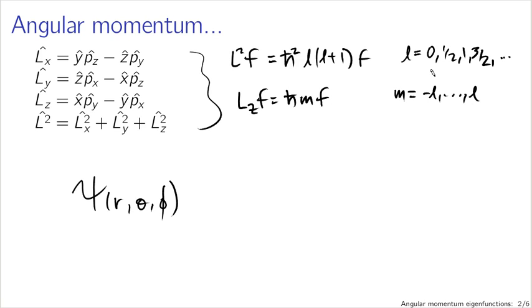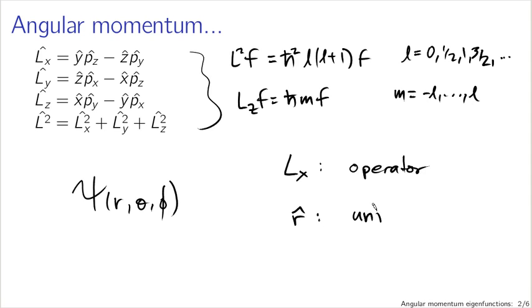Unfortunately in this lecture we run into some thorny notational issues. I like to use hats to designate operators. Griffiths, your textbook author, likes to leave the hats off when it's not ambiguous. This is one of those cases where it is ambiguous — hats in this section of the textbook also mean unit vectors. So I'm going to follow Griffiths' notation: if I write something like Lx, I mean the operator, and if I write something like R hat, I mean the unit vector.